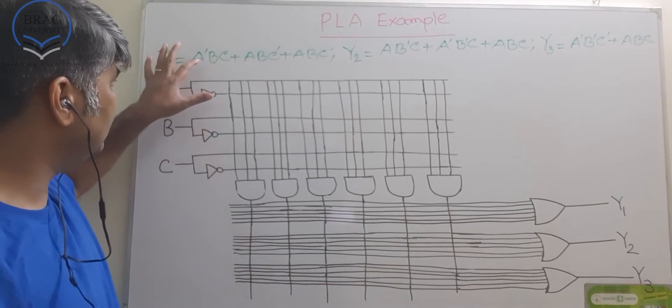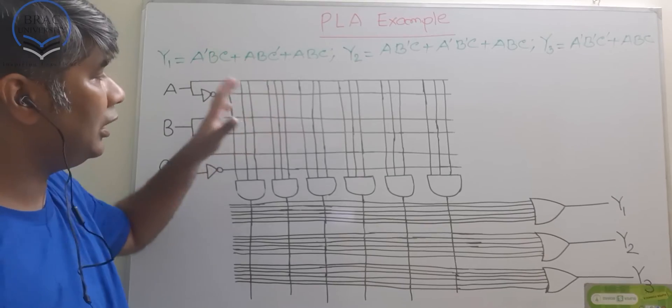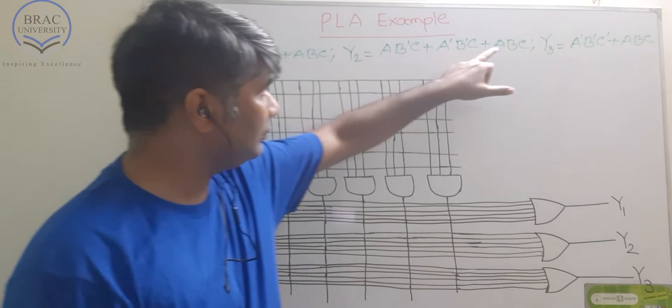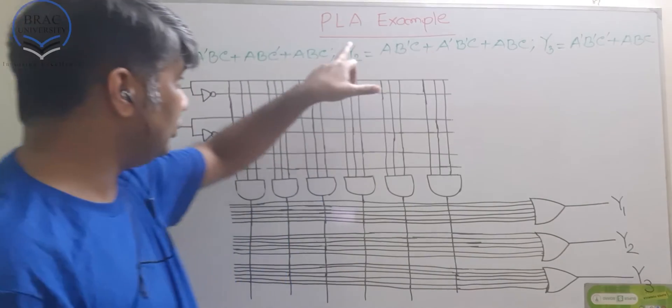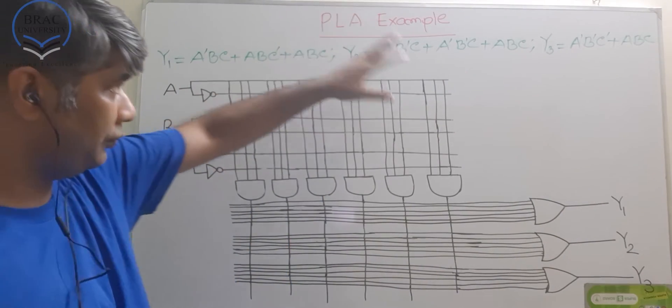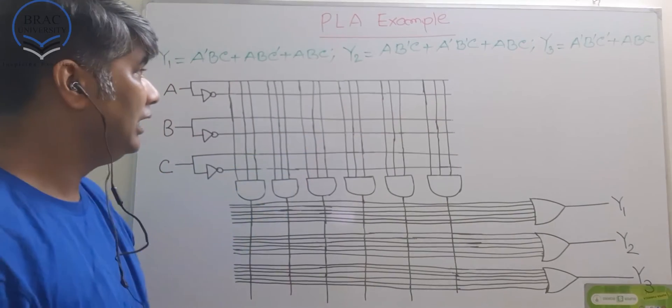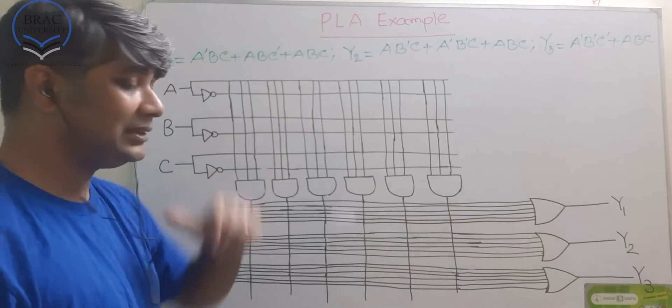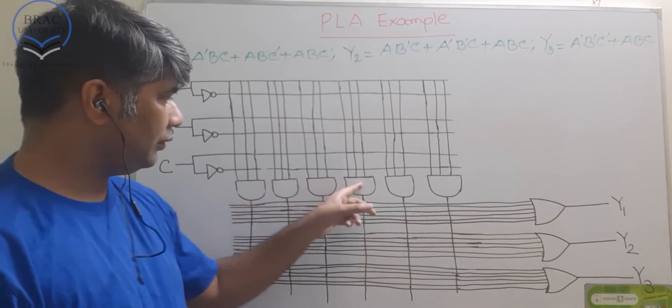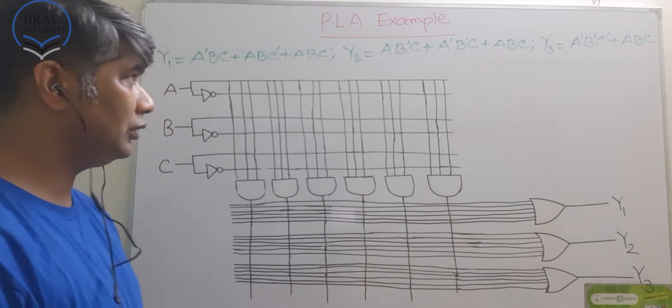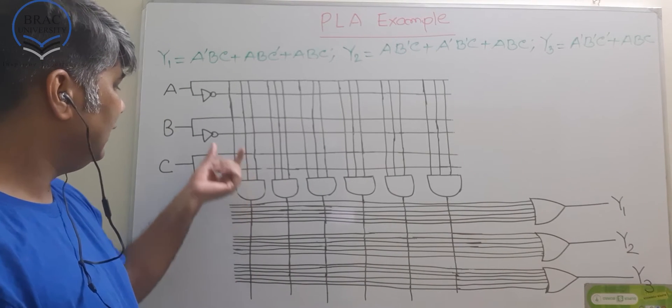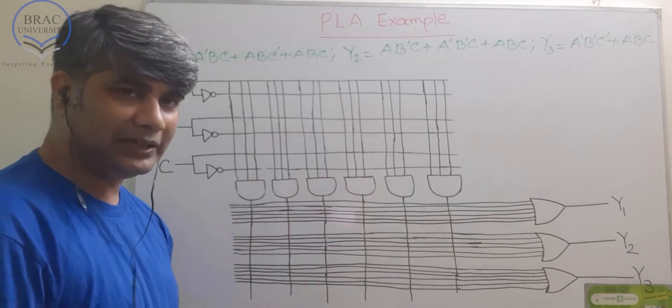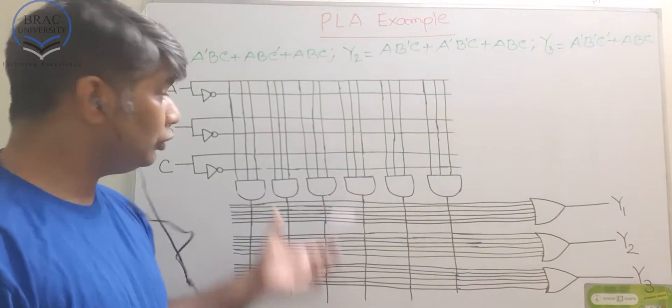Now, let's consider the AND terms that we have here. How many AND terms do we have? We have 1, 2, 3, 4, 5. This is A'BC and we have A'BC here. If you count, then you would see that in these three outputs, we need six AND gates. 1, 2, 3, 4, 5, 6. Now, our job is to make inputs available for these AND gates, which means we need to solder this link.